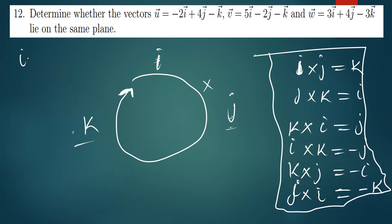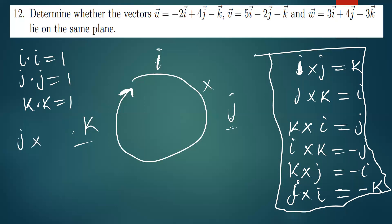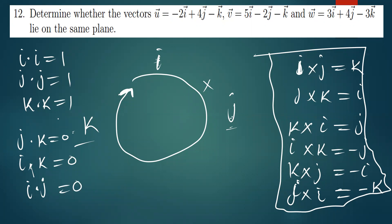For the dot product: dotting two of the same unit vectors gives you 1, so j dot j equals 1 and k dot k equals 1. But anything different from this gives you zero — for example, j dot k equals zero, i dot k equals zero, k dot i equals zero, and i dot j equals zero. Anything apart from same-unit-vector pairs gives you zero.